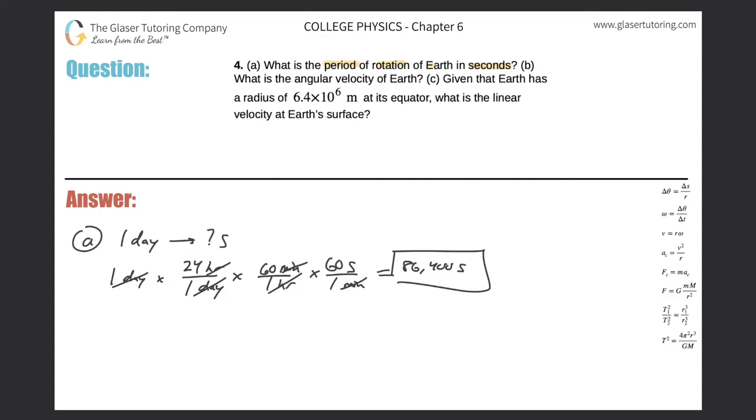For letter B, what is the angular velocity? Now remember, take a look on the right hand side—angular velocity is this unit right here, omega. It's like a little booty.